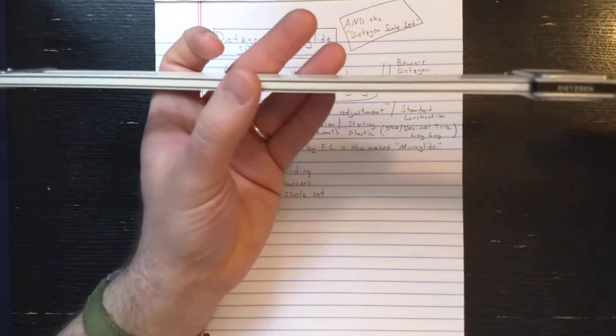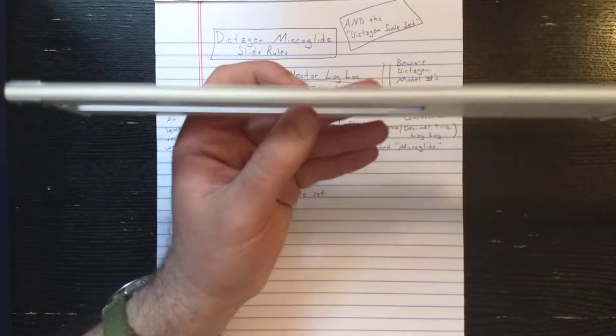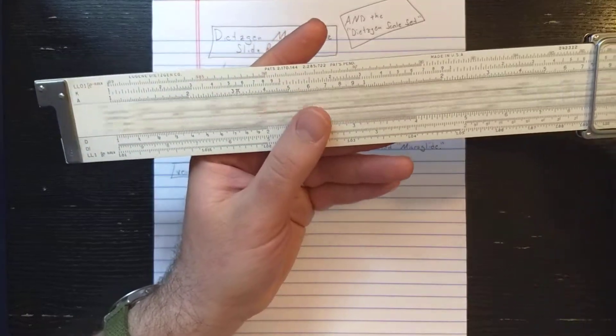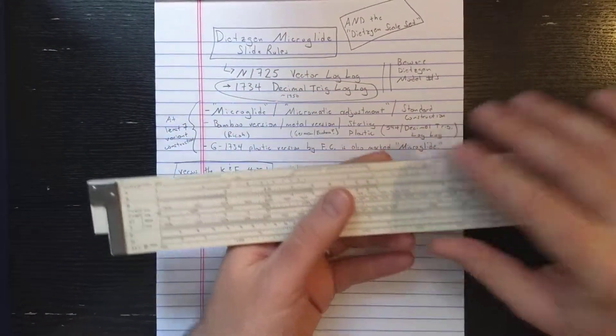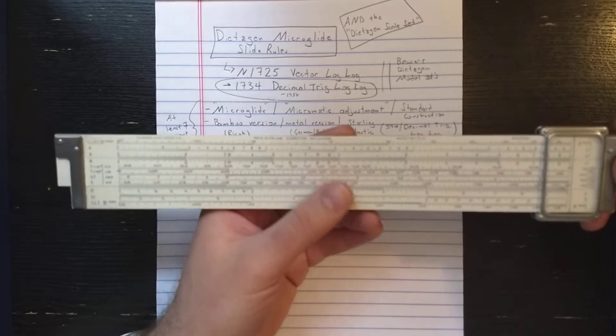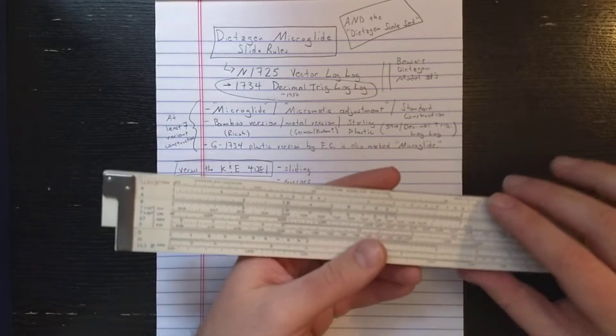Okay, so that's what the microglide construction is. It's the Teflon insert. So there's this slide roll with that construction. There's also the vector log log slide roll with that construction. It's built on the same frame but a different scale set.